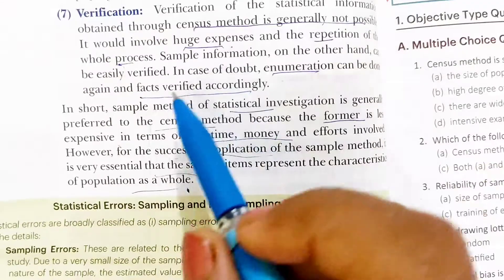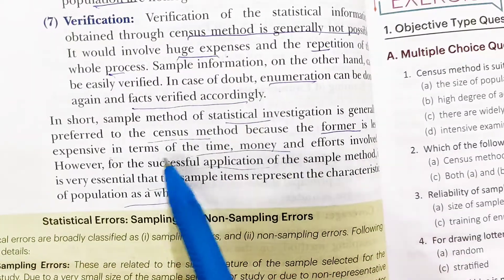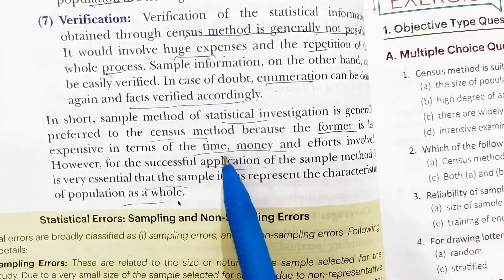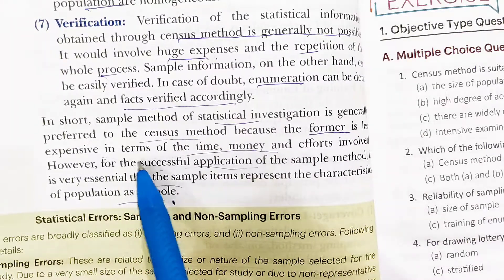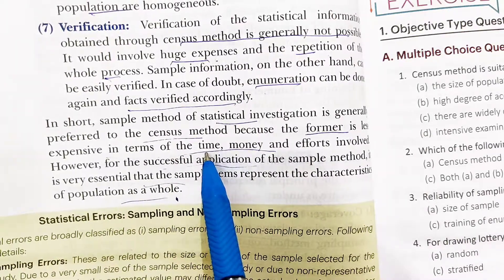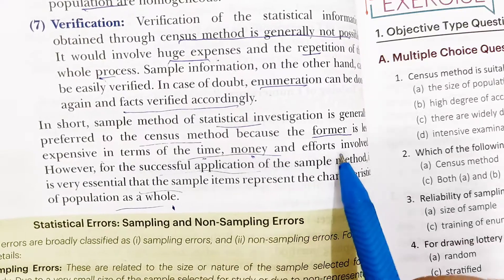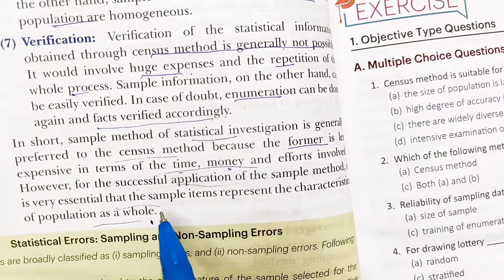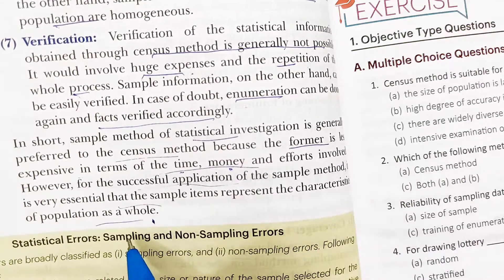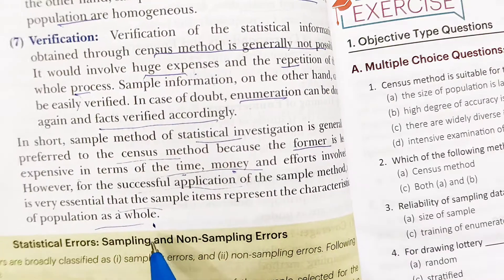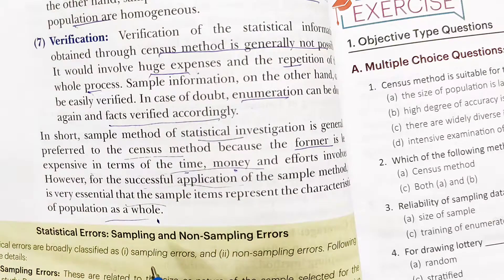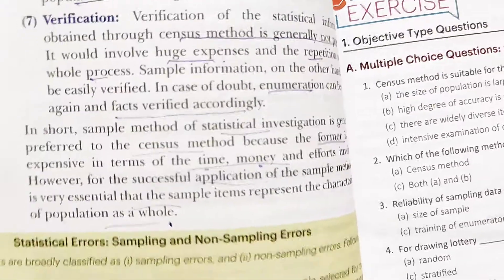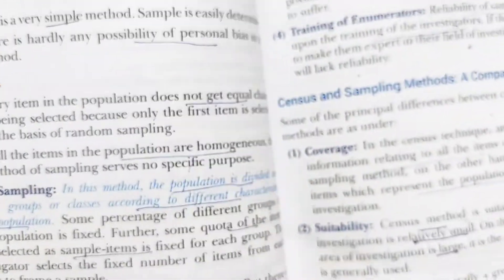In summarized form, we can say that the sample method of statistical investigation is generally preferred over the census method because it is less expensive in terms of time, money, and effort. However, for the successful application of the sample method, it is very necessary that the sample items represent the whole population. So this is the comparison between the census and the sample method.